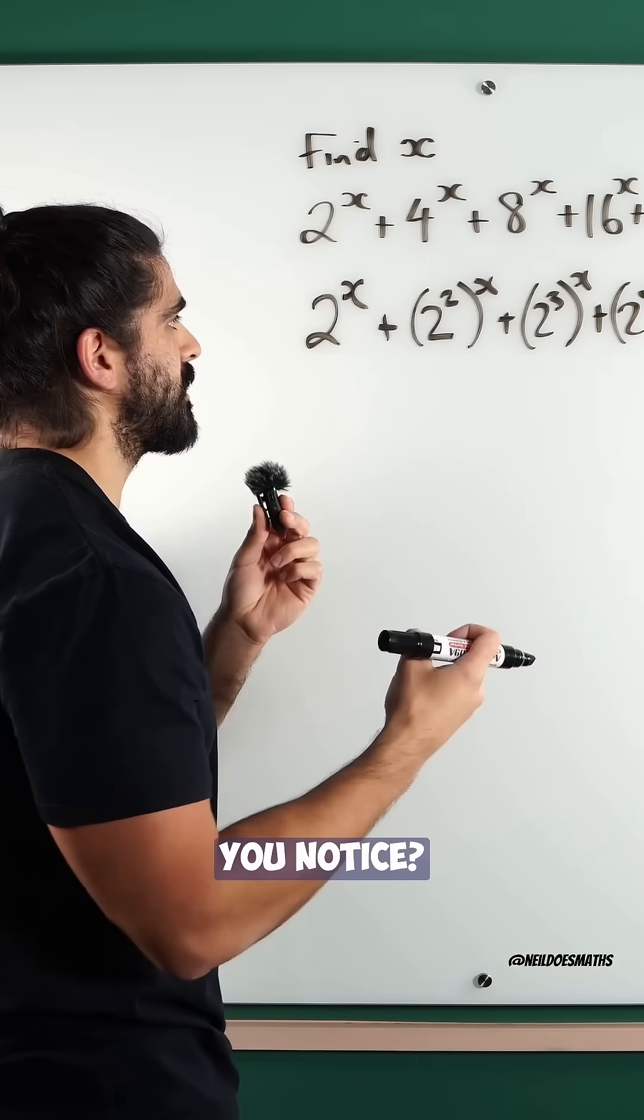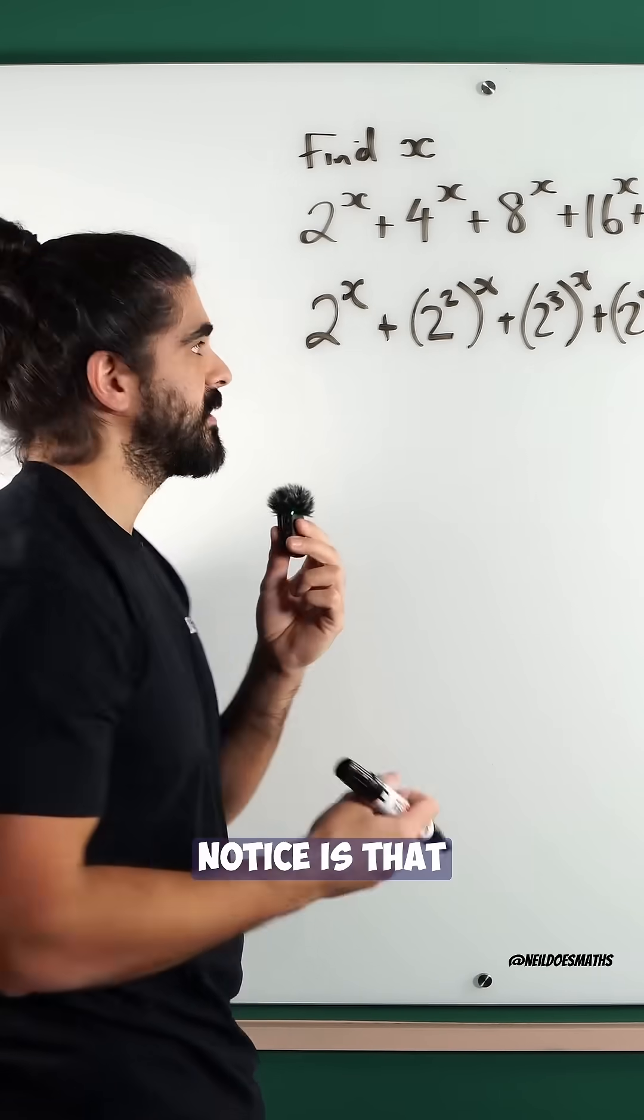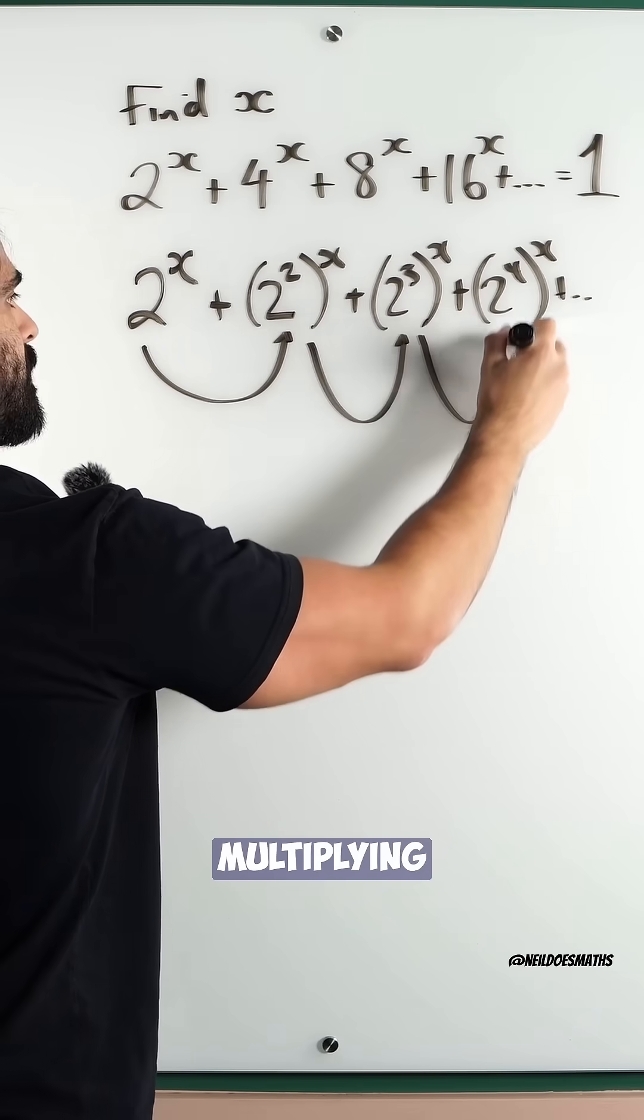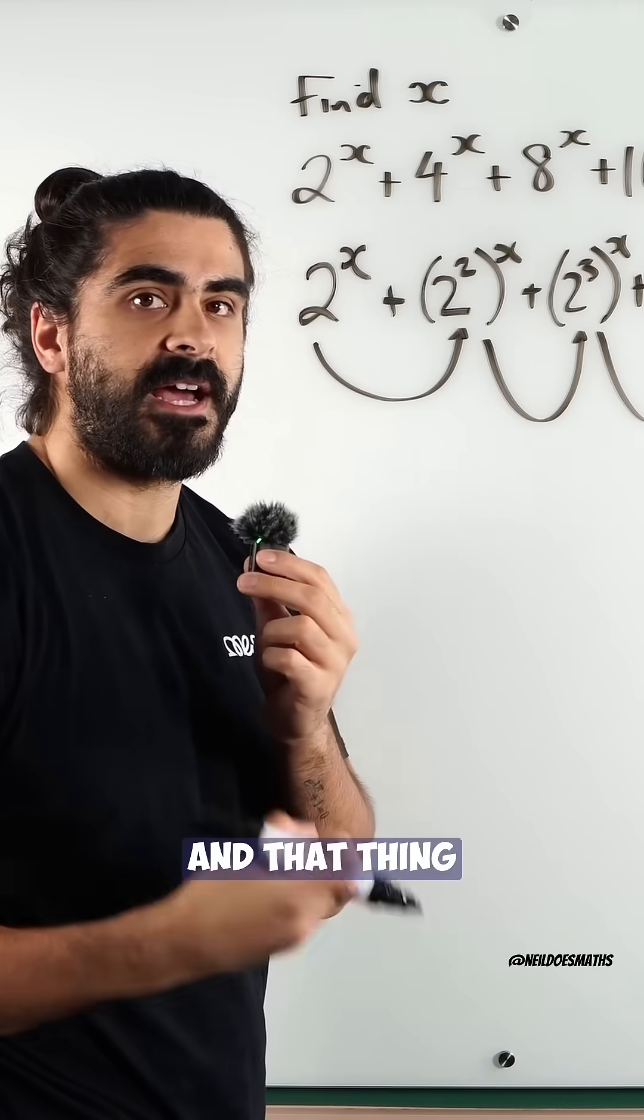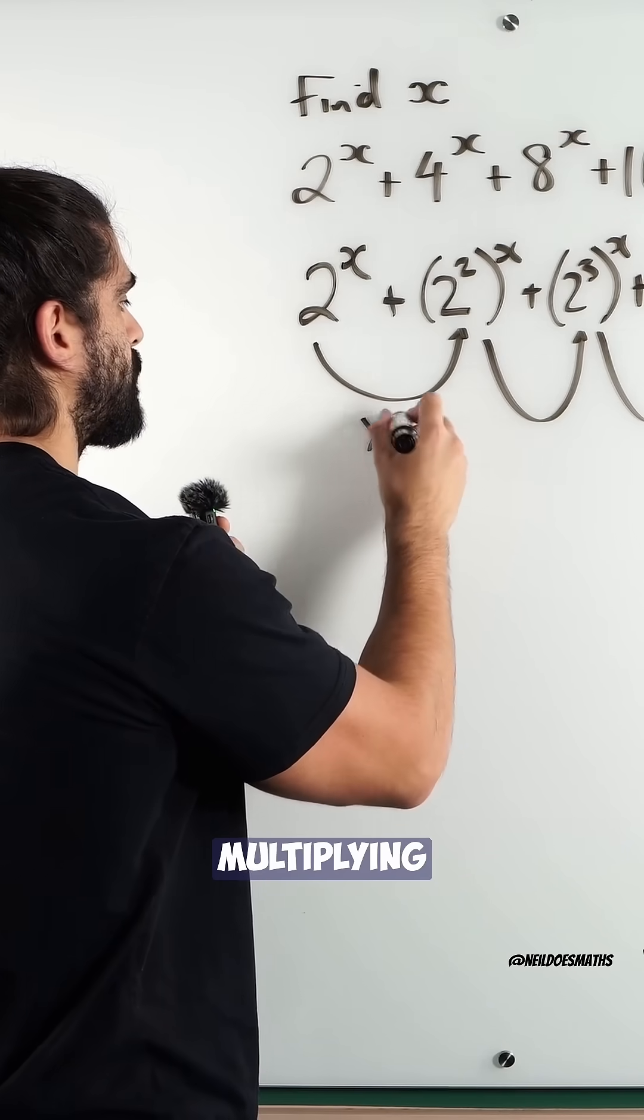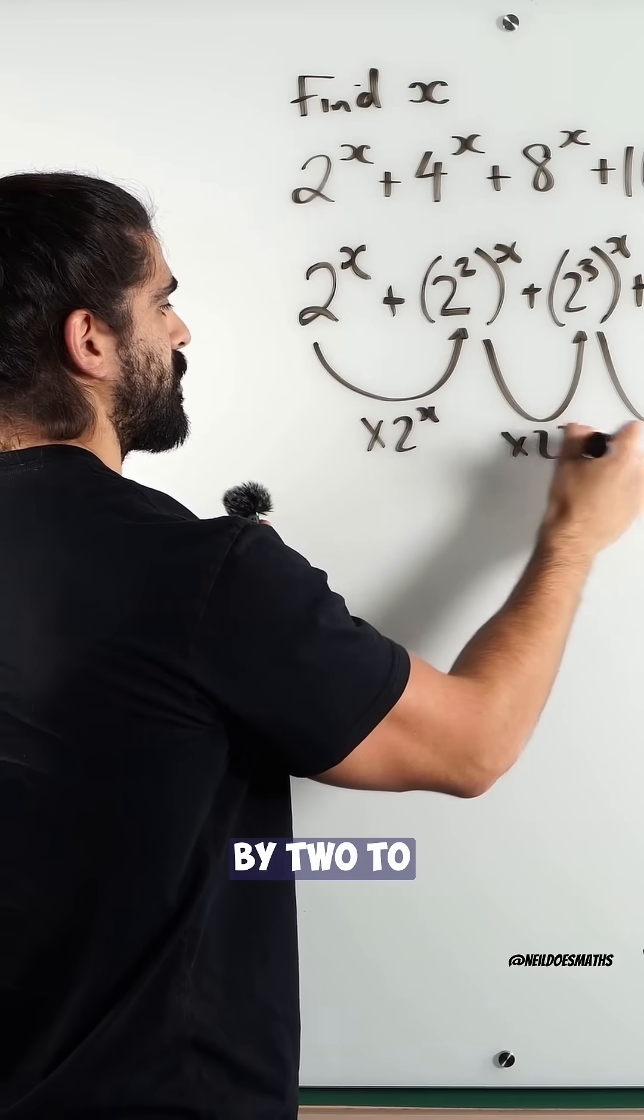Now, what do you notice? What you should notice is that to go from term to term, we are multiplying by the same thing, and that thing is 2 to the power of x.